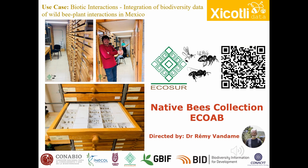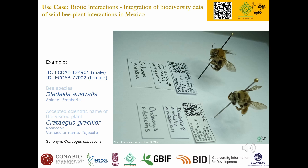For our case study, we focus on the records available in the ECOAB native bees collection, directed by Dr. Remy Vandame, and located in the ECOSUR unit of San Cristobal de las Casas, Chiapas, Mexico. To learn more about the collection and the work of the ECOAB group, we invite you to scan the QR code. The data model was fed from the information available on the bee specimen labels. In the photo, you can see a male and a female of the species Addaea australis. These specimens were collected in different locations — the male in Oaxaca and the female more than 500 kilometers away. Both specimens were collected while visiting the Tejocote tree, Crataegus gracilior, which offers edible fruits that are very popular in Mexico. As part of the work performed in the Chicotli Data project, our expert taxonomists verified all the species names of the plants visited by the bees before entering the information into the data model.